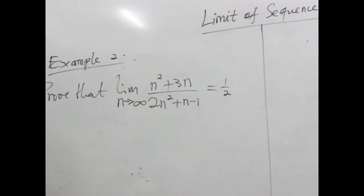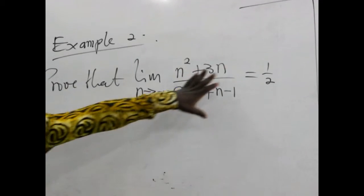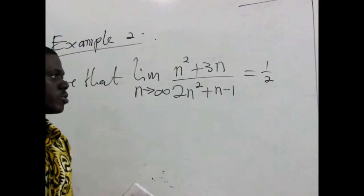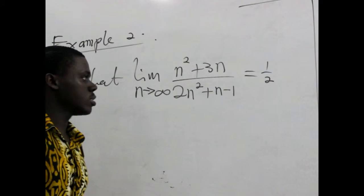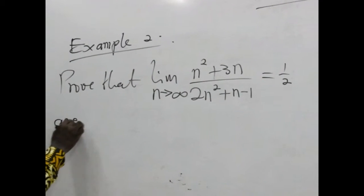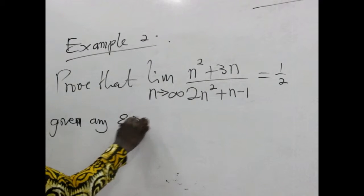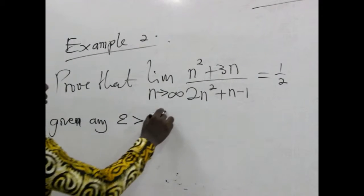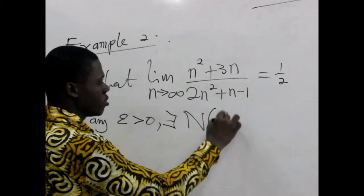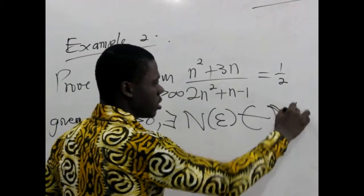We learnt in our previous lesson that given anything of this form, then there is an equivalent statement. To prove this, we need to come out with an equivalent statement, which is that, given any epsilon positive, there exists certain N, big N, which is a function of epsilon, and it belongs to the set of natural numbers.